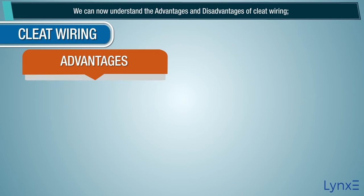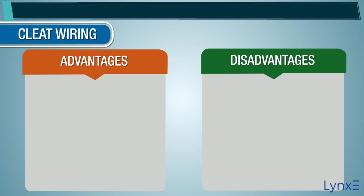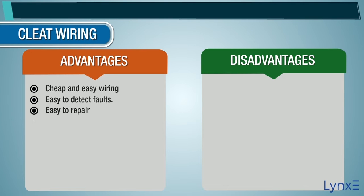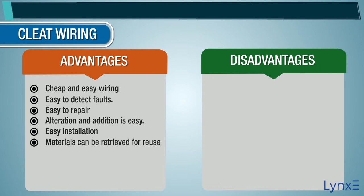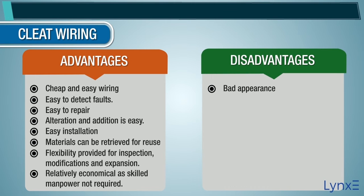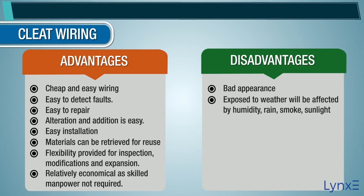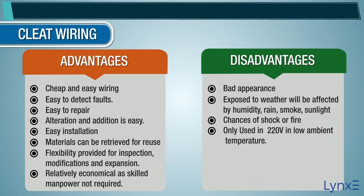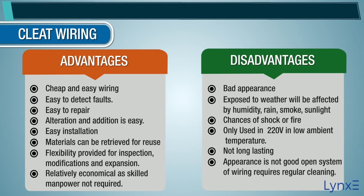Advantages of cleat wiring: Cheap and easy wiring, easy to detect faults, easy to repair, alteration and addition is easy, easy installation, materials can be retrieved for reuse, flexibility provided for inspection, modifications, and expansion, relatively economical as skilled manpower is not required. Disadvantages: Bad appearance, exposed to weather and will be affected by humidity, rain, smoke, and sunlight. Chances of shock or fire, only used at 220 volts in low ambient temperature, not long lasting. An open system of wiring requires regular cleaning and has a higher risk of mechanical injuries.